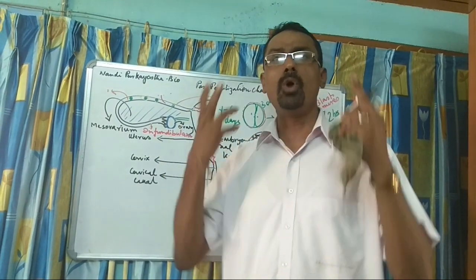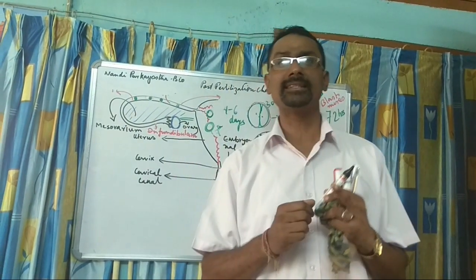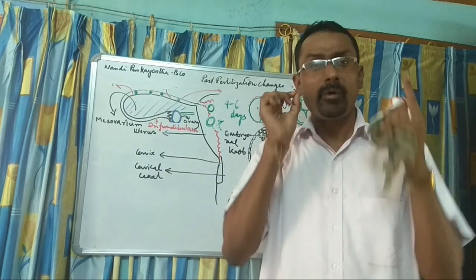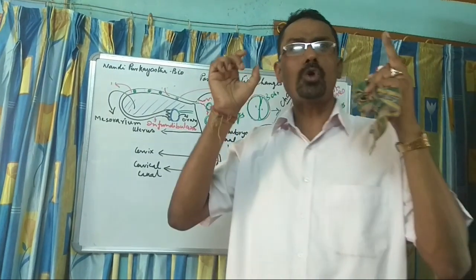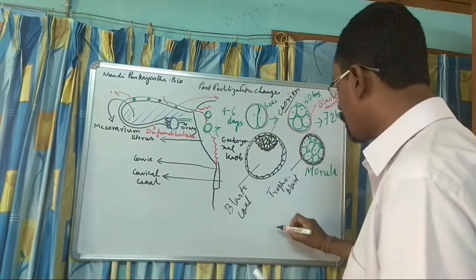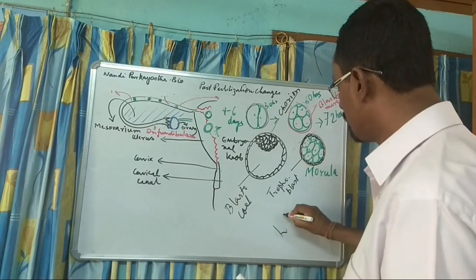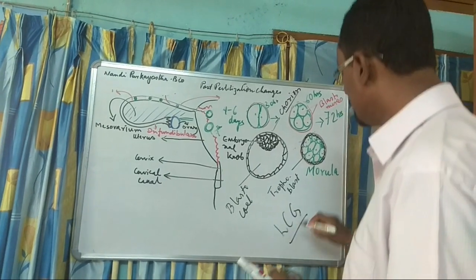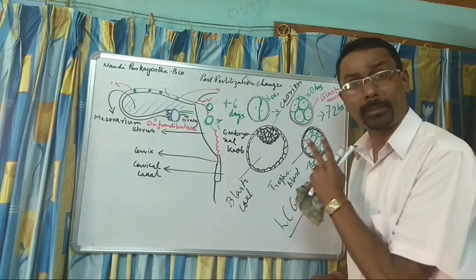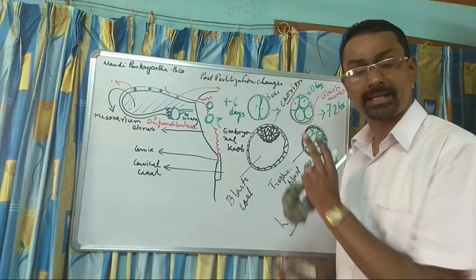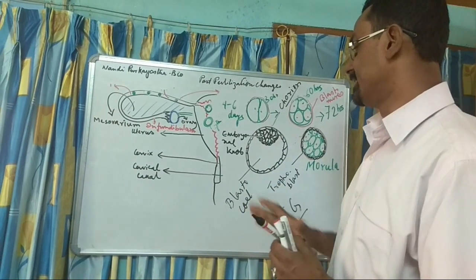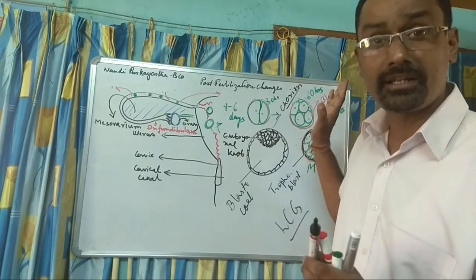The hormone produced is Human Chorionic Gonadotropin, written in short as HCG. So this is the blastocyst and blastula formation.